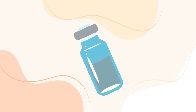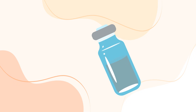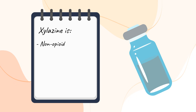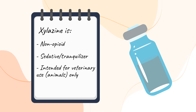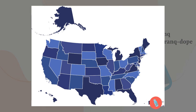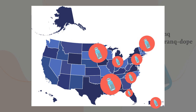Xylozine is a drug that is being added to the illicit drug supply in the United States. It is a non-opioid veterinary tranquilizer that is not approved for use in humans, and is often referred to as Trank or Trank Dope. Xylozine was first used as an additive to heroin in Puerto Rico in the early 2000s and from there spread to Philadelphia around 2017. While still concentrated in the Northeast, xylozine is now being detected across the entire United States.